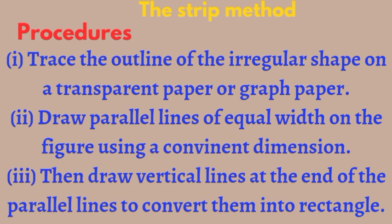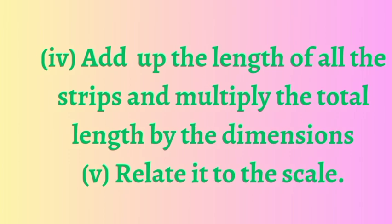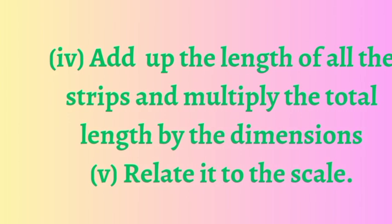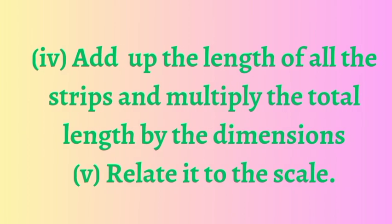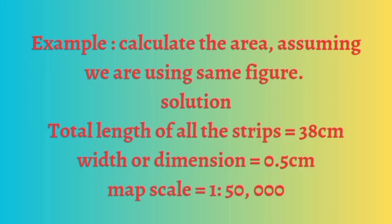Next is the strip method. Using the strip method, first trace the outline of the irregular shape, then fill the area with strips of equal width. Draw a series of parallel lines using a suitable dimension — for example 0.5 units. You can also draw vertical lines, which automatically converts the shape to a rectangle. Then add up the lengths of the strips, multiply by the width dimension, and relate to the scale.